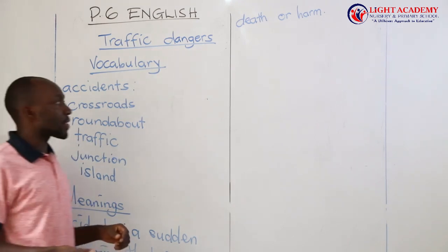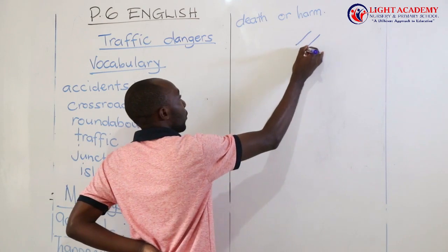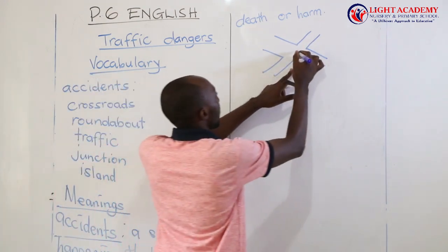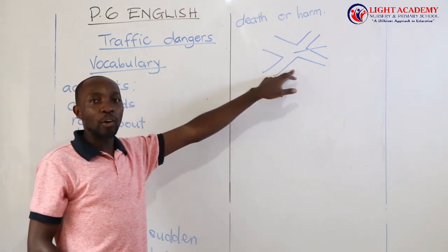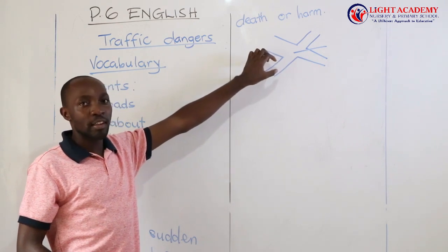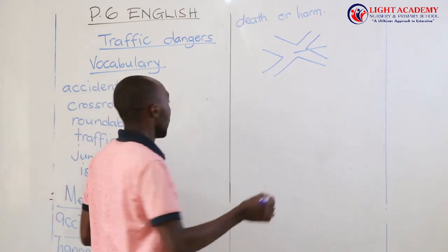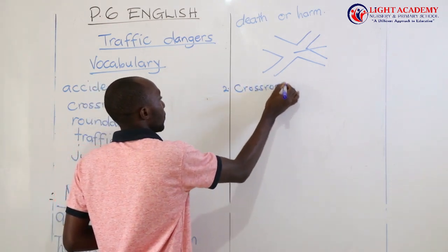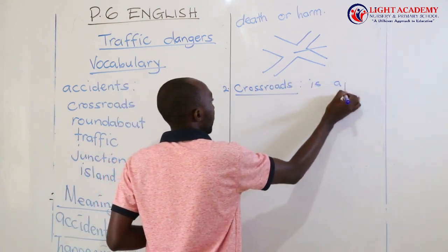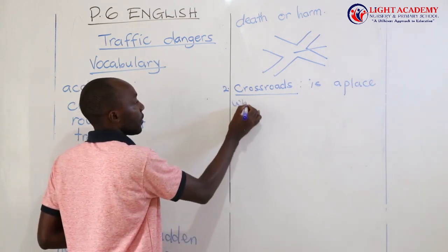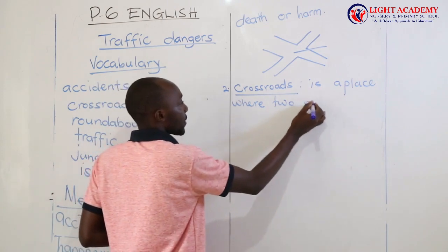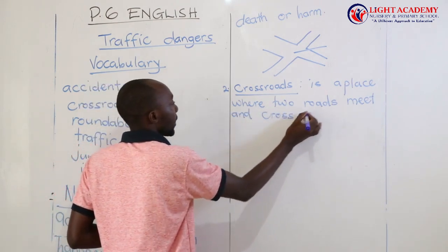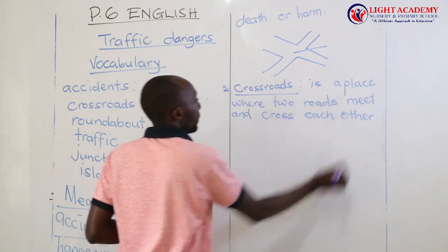Let's look at another one, which is crossroads. Let me draw for you a diagram to show the crossroads. This is what we call a crossroads — this point here where two roads meet and cross each other. That's what we call crossroads. Therefore, crossroads is a place where two roads meet and cross each other.